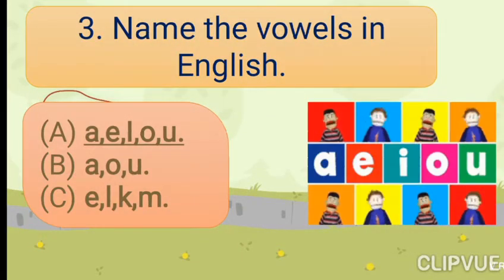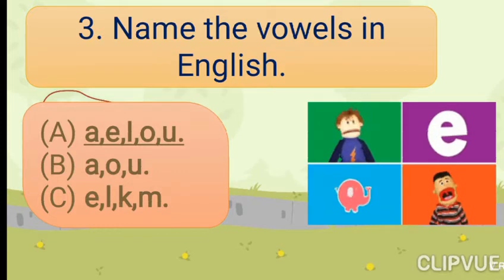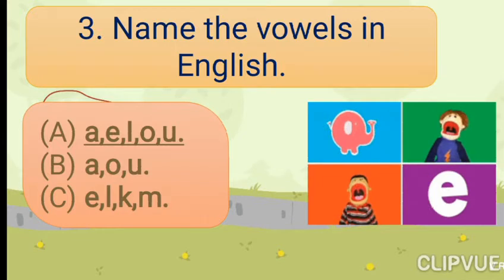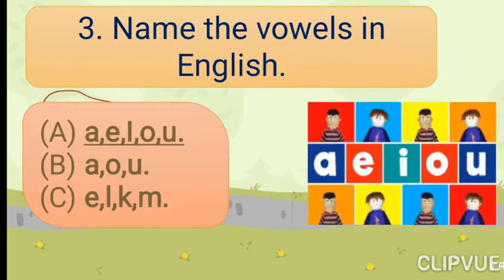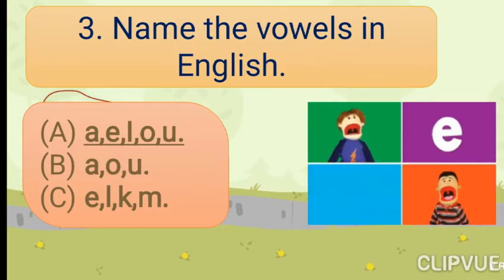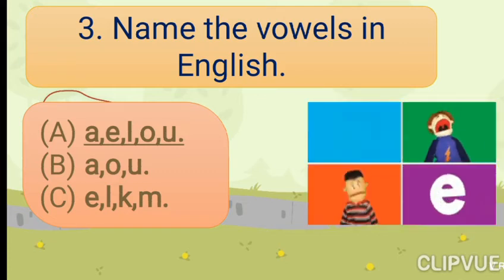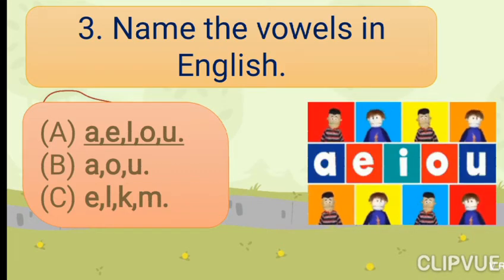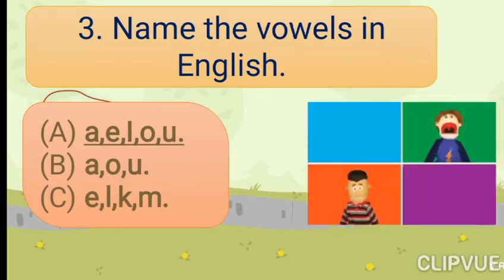Name the vowels in English. Option A: A, E, I, O, U. Option B: A, O, U. Option C: E, L, K, M. Answer is Option A: A, E, I, O, U.